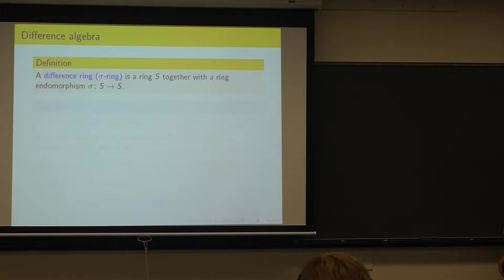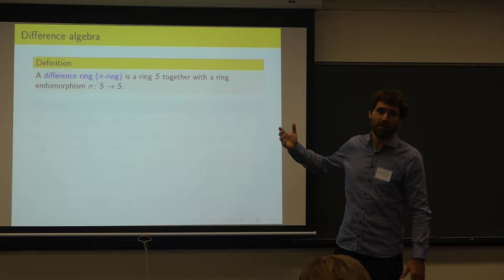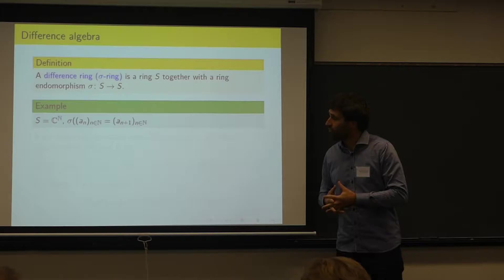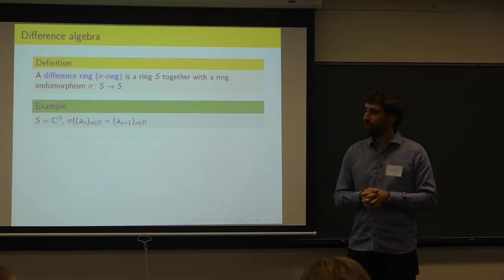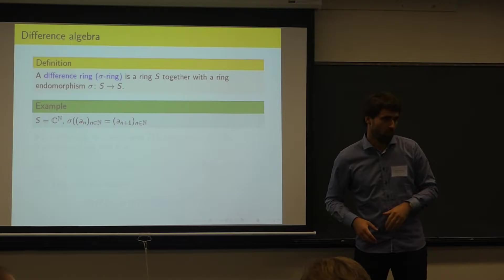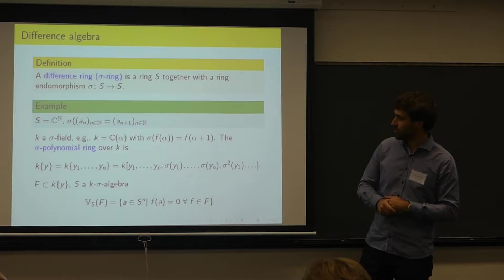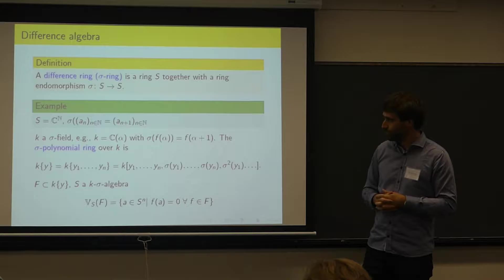Let's start with the basic definitions. For me, a difference ring is just any commutative ring with an endomorphism — analogous to differential algebra, where you look at rings with a derivation, but in difference algebra we look at rings with an endomorphism. A basic example is the ring of all sequences in C, with componentwise addition and multiplication, and the endomorphism is the shift — you shift the sequence one step to the left. Throughout the talk I'll fix a difference field k, for example the rational functions with the shift.